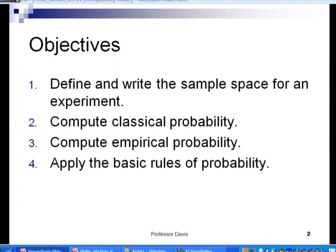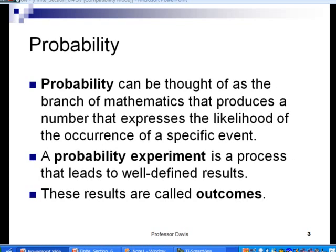In slide number 2, we lay out what we want to get done in this section. Here we want to define and write the sample space for an experiment. Then we'll compute the two types of probabilities: the classical probability concept and empirical probability, sometimes called relative frequency probability. And then we'll talk about applying the basic rules of probability.